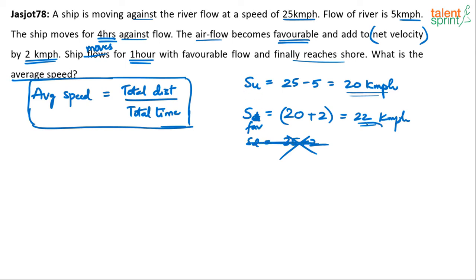And at that speed, the ship moved for 1 hour. So at 20 km per hour, it ran for 4 hours. And here it ran for 1 hour. So what's the total distance? Total distance is speed into time. So 20 into 4 plus 22 into 1. And total time is 4 plus 1. Simplify this for average speed.